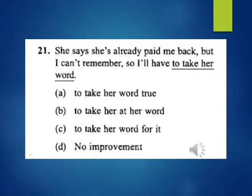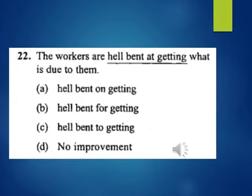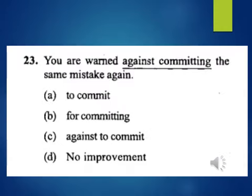Question 21: She's already paid me back but I can't remember, so I will have to take her word. 'To take her word' is underlined — find a right phrase. A, to take her word true; B, to take her at her word; C, to take her word for it; D, no improvement. Question 22: The workers are hell-bent at getting what is due to them. 'Hell-bent at getting' is underlined. A, hell-bent on getting; B, hell-bent for getting; C, hell-bent to getting; D, no improvement.